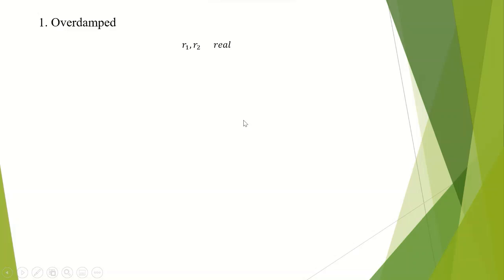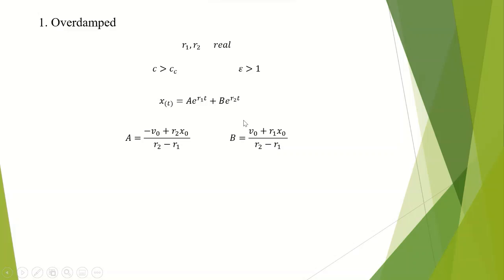For the case of an overdamped system, the roots R1 and R2 are real numbers and the damping ratio is greater than one. The solution is given where A equals minus R2 times the initial displacement, all divided by R2 minus R1; and B equals the initial velocity plus R1 times the initial displacement, all divided by R2 minus R1.